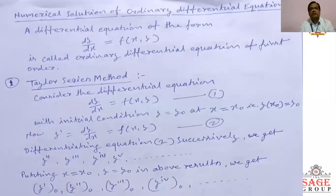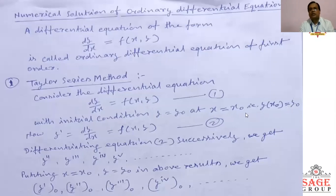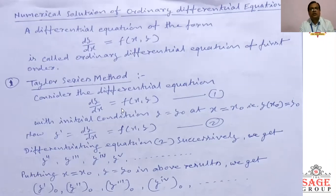Consider the differential equation dy/dx equal to f(x, y), which is our ordinary differential equation of first order, with the initial condition y equal to y-naught at x equal to x-naught, that is y(x-naught) equal to y-naught. In this initial value problem, the ordinary differential equation dy/dx equal to f(x, y) will be solved with the help of the Taylor series method.